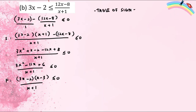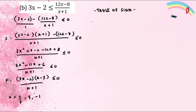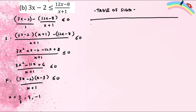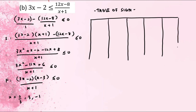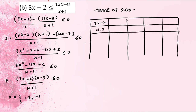Now use the table of signs method. How many x-values do we have? We have x = 2/3, x = 3, and x = −1 from the denominator. Draw the table: since we have three factors plus the product, that's 4 rows, and with 3 critical values we have 4 columns — so 1, 2, 3, 4 columns altogether.